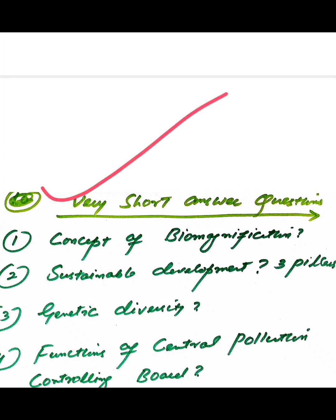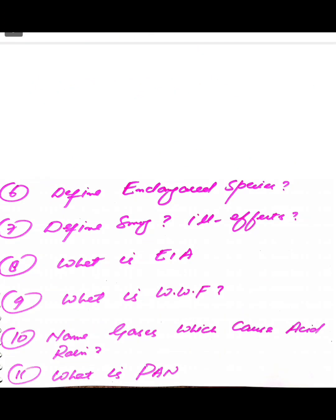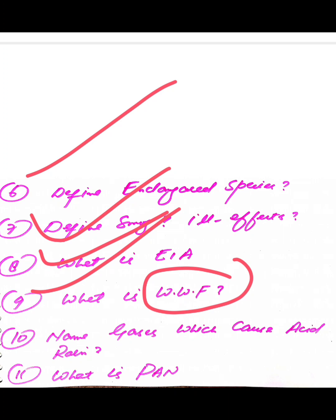For very short answer questions: concept of biomagnification, sustainable development and its three pillars, define genetic diversity, functions of the Central Pollution Control Board, objectives of the Montreal Protocol, define endangered species, define smog and its ill effects, what is EIA, what is WWF (it does not stand for World Wrestling Federation — it has a different meaning), name gases which cause acid rain, and what is PAM. This covers the model and most probable questions for class 12. Hopefully most of the paper will come from these questions. Thank you for your cooperation.